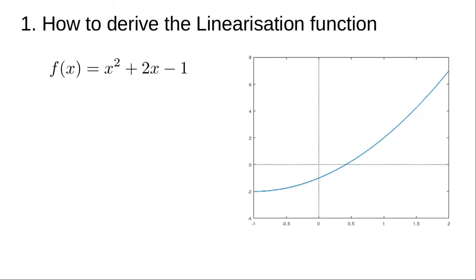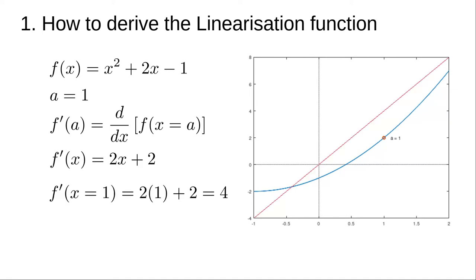Let's take the function f of x as an illustrative example. Let a equals 1 be the value of x where we want to approximate f of x. Let f of a dash be the gradient of the tangent line at the point x equals a. This is the first derivative of the function evaluated at the chosen value a. This result of 4 is the gradient for the function at this point a equals 1.